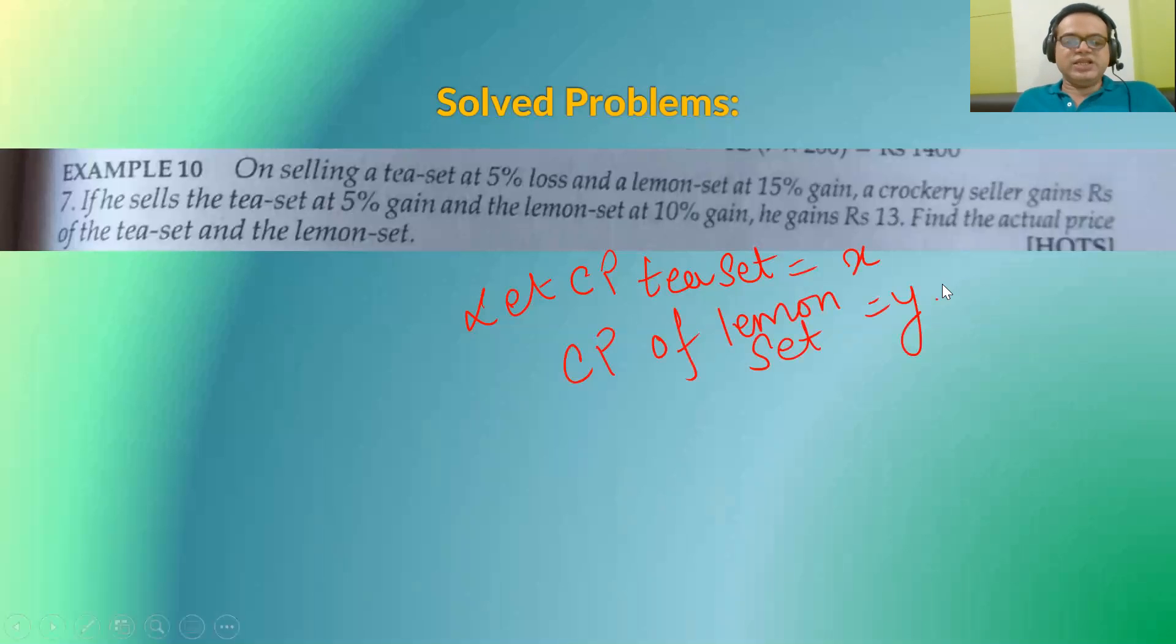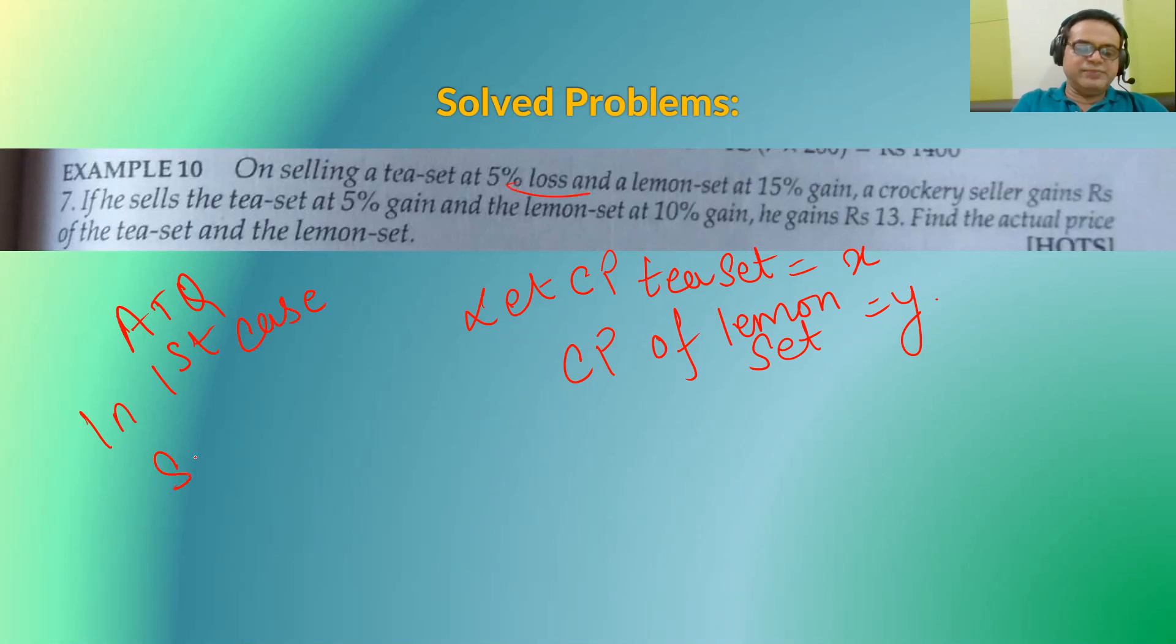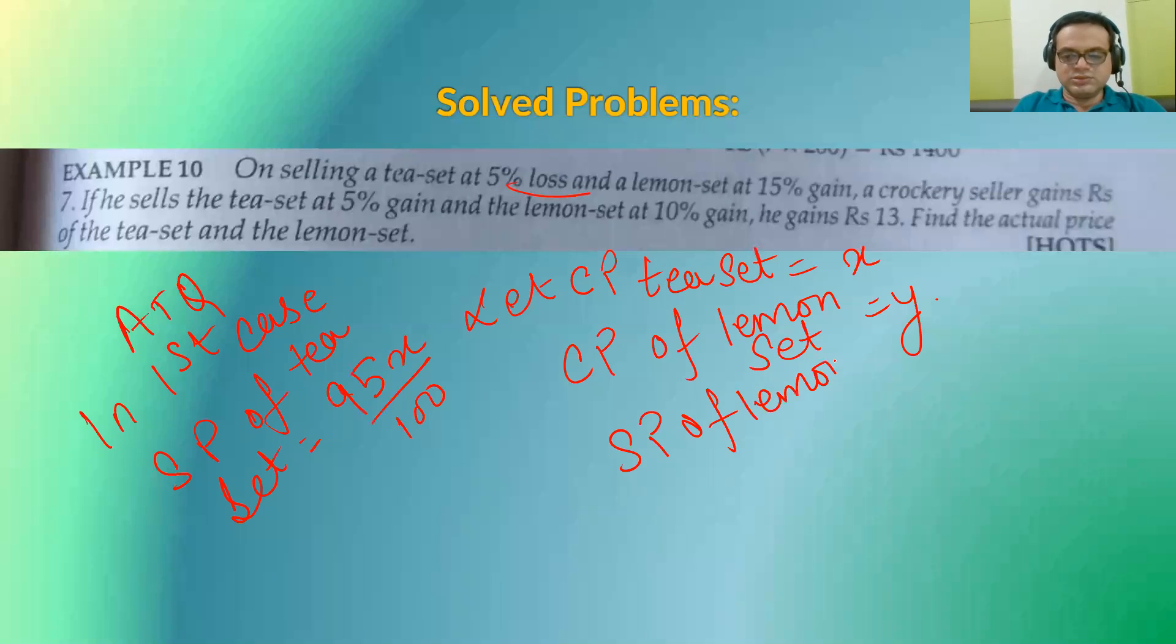Now, if the cost price is enough and according to the question, ATQ, in the first case, T set, Loss, selling price of tea set will be equal to 95X upon 100. And selling price of lemon set will be equal to 115Y upon 100.